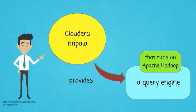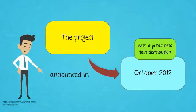Cloudera Impala is a query engine that runs on Apache Hadoop. The project was announced in October 2012 with a public beta test distribution.